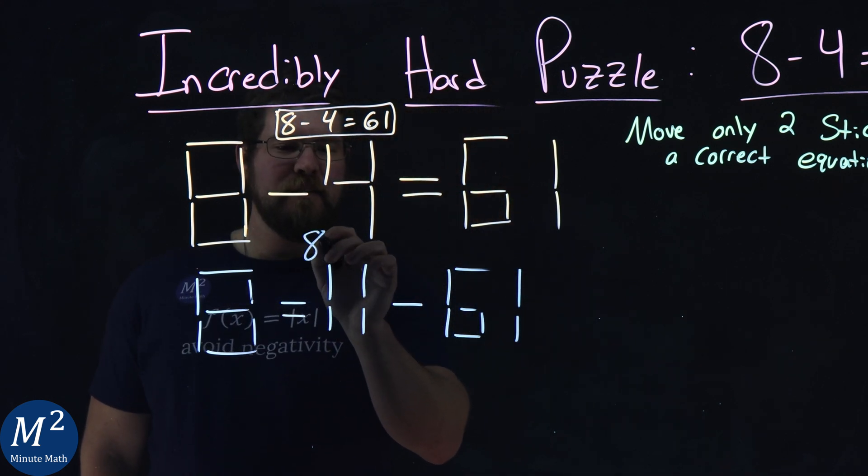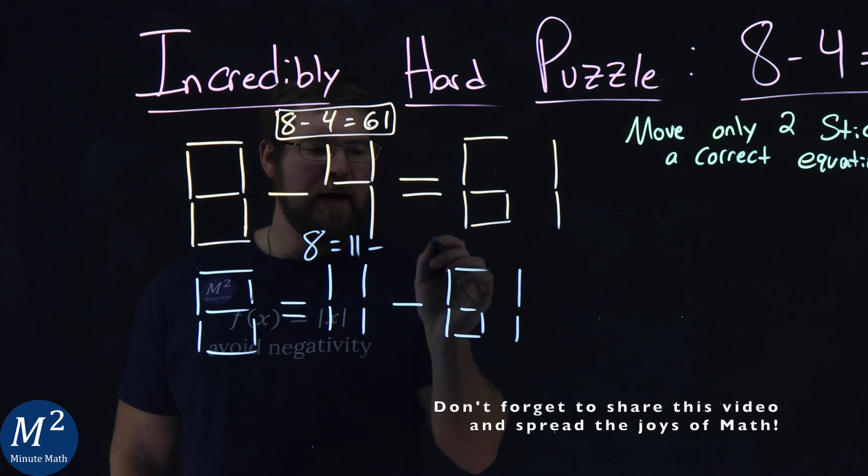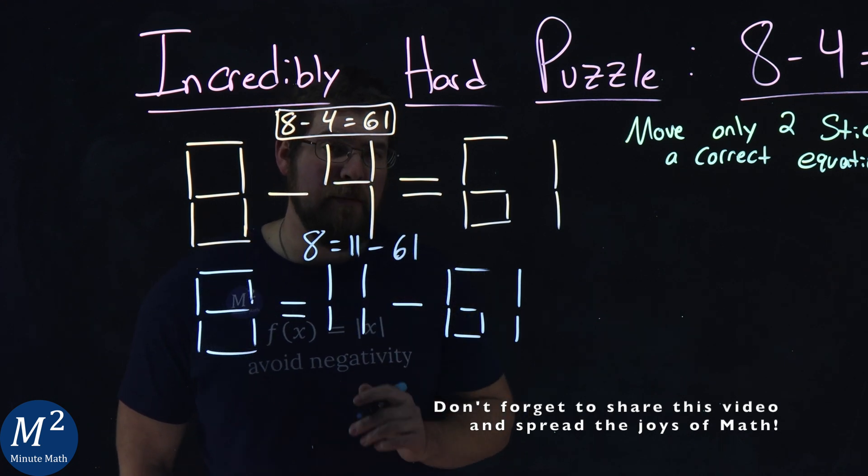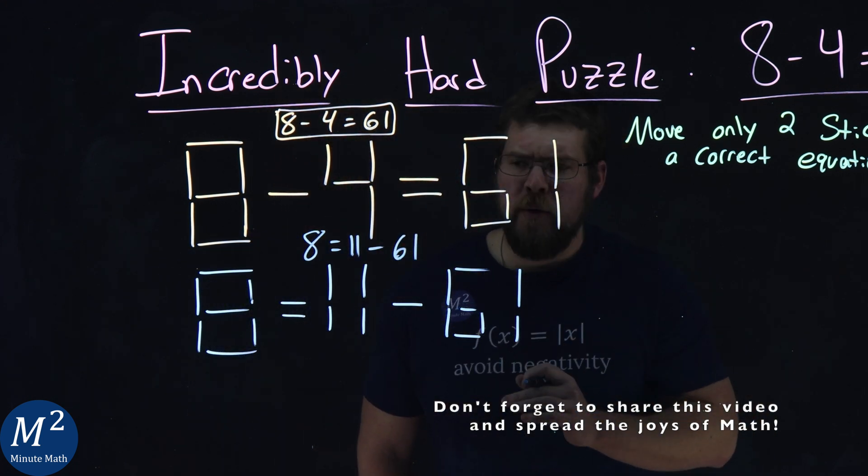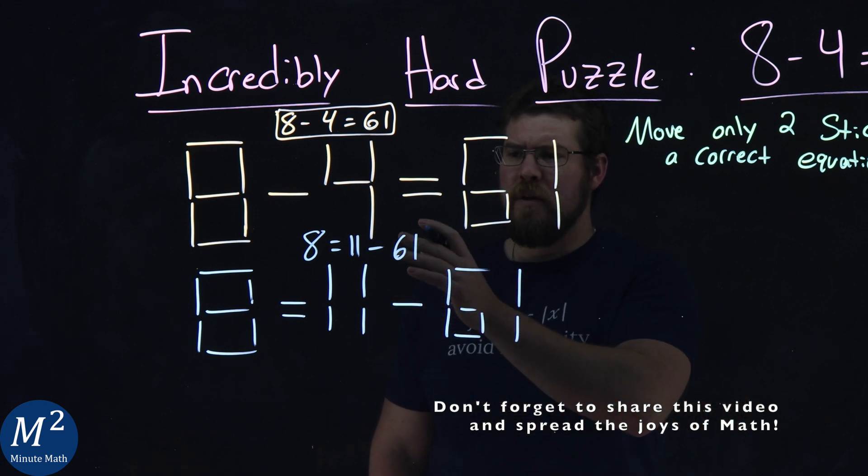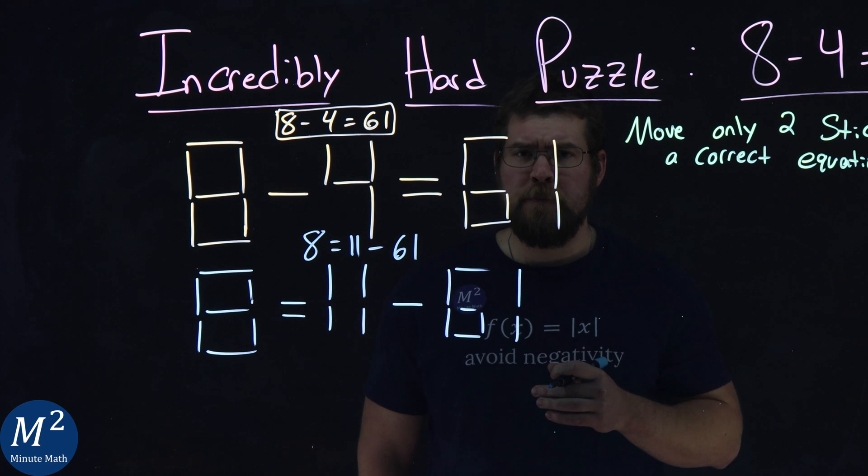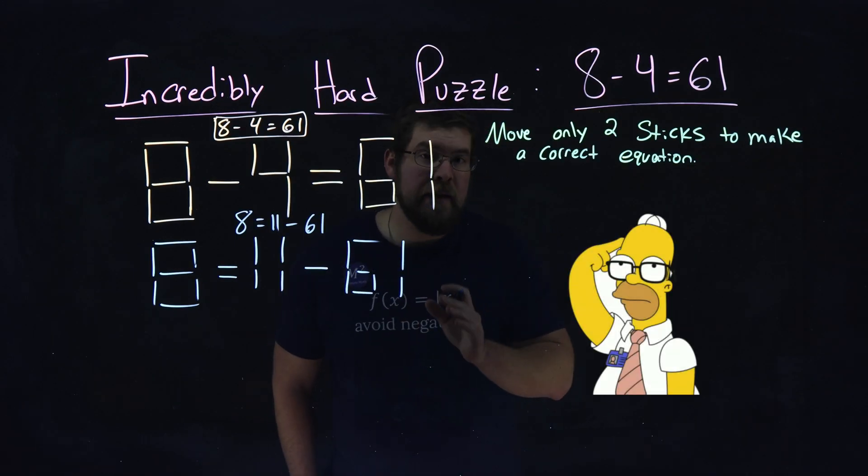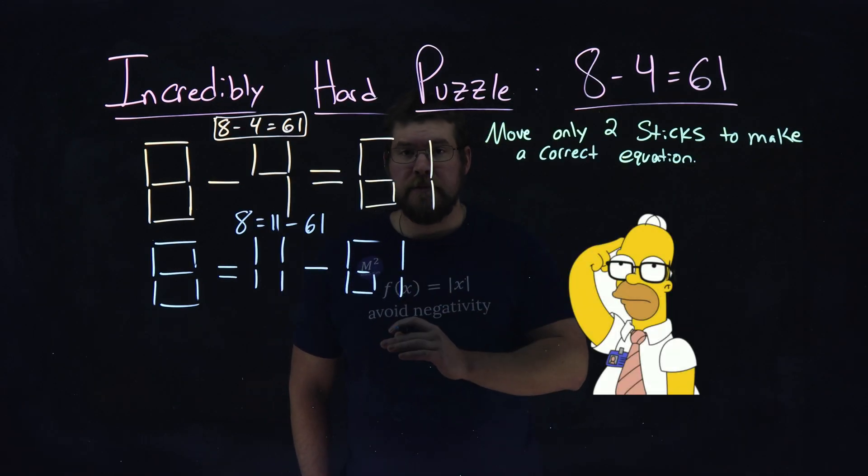So right now we have 8 equals 11 minus 61. Now you're probably wondering, well, that's an incorrect answer. 8 does not equal 11 minus 61. And this is where we want to think outside of the box here.